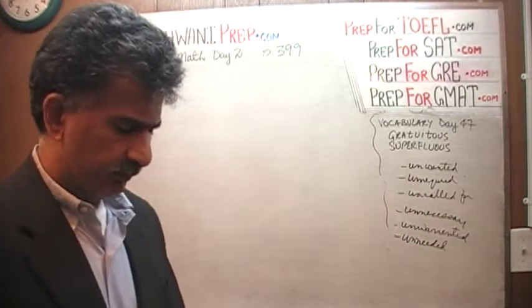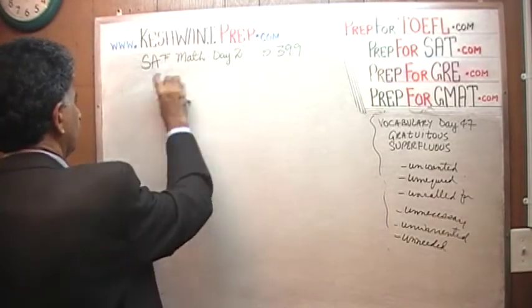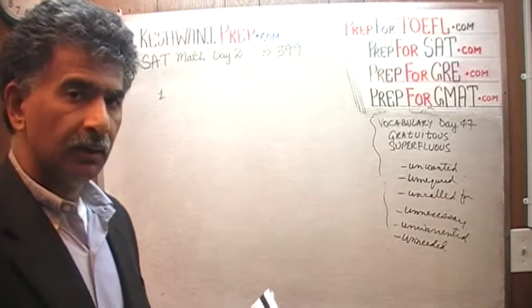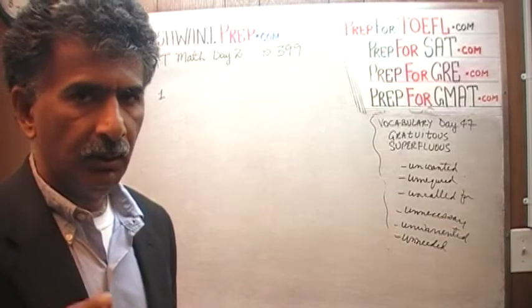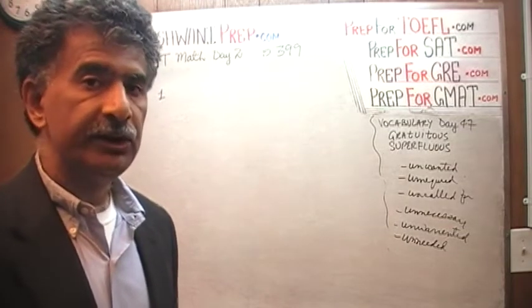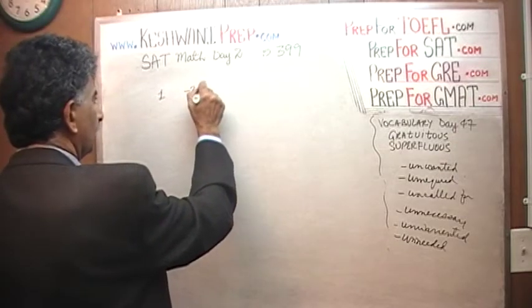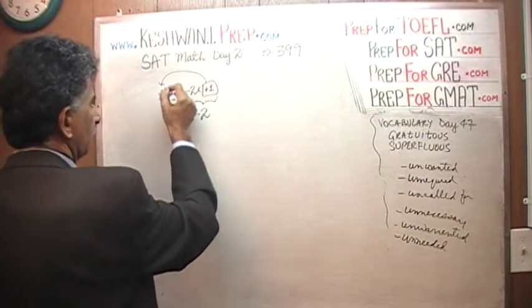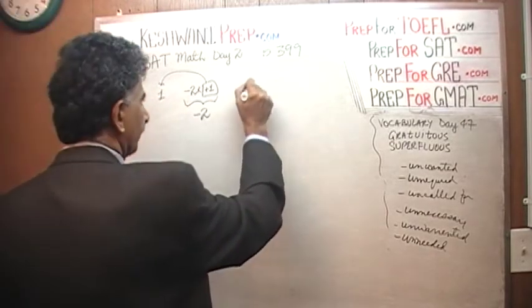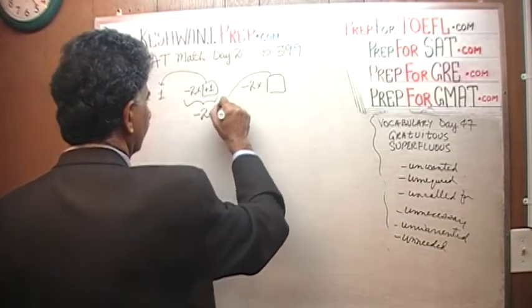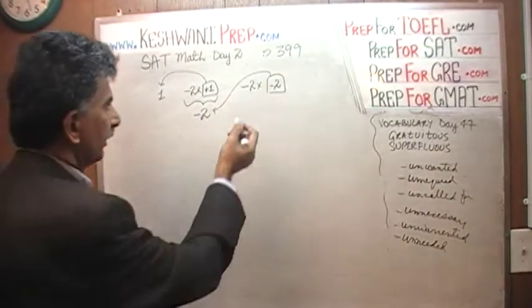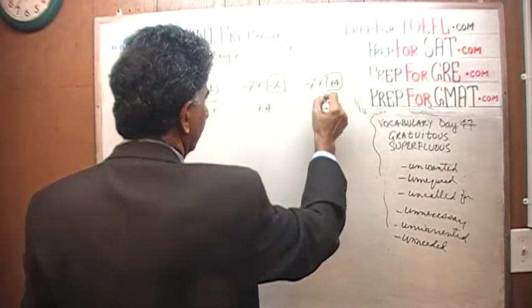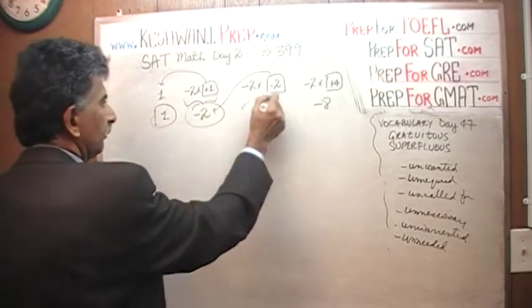Number 13. It says first term of the sequence of numbers is 1. Alright. First term is 1. Each term after the first term is the product of negative 2 and the term preceding it. Let's read one more time. Each term after the first term, and we already told what the first term is. The first term is 1. Each term after that is negative 2 times the term preceding it. The term preceding it was 1 here. So which means the second term is negative 2. Because it's negative 2 times the term preceding it, which is negative 2. What about the next one? Again, it's going to be negative 2 times the term preceding it, which is this guy right here. So it becomes negative 2 times negative 2 is positive 4. And the one after that is going to be negative 2 times positive 4 which is negative 8. So that's what we have here. We have 1, negative 2, positive 4, negative 8.